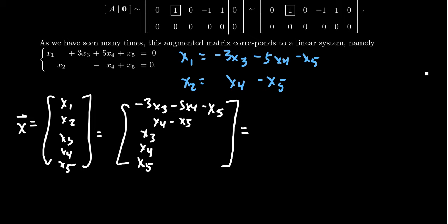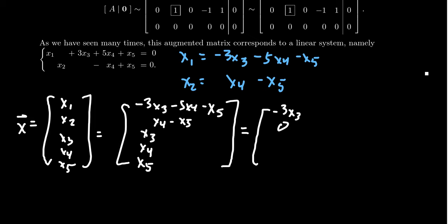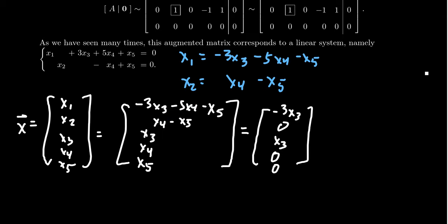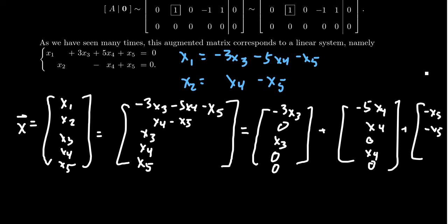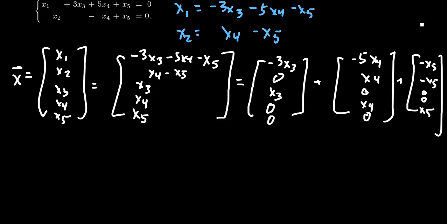If you take the first vector associated to x3 — look at those terms in this vector that involve an x3 — we get the vector: negative 3x3, 0, x3, 0, 0. The next one is a vector for x4, which gives: negative 5x4, x4, 0, x4, and 0. And then lastly, a third vector for x5, giving: negative x5, negative x5, 0, 0, and x5. So we separate our general solution into a sum of three vectors dependent on the three free variables.